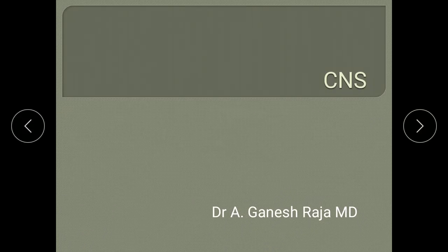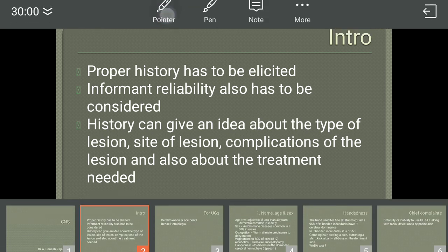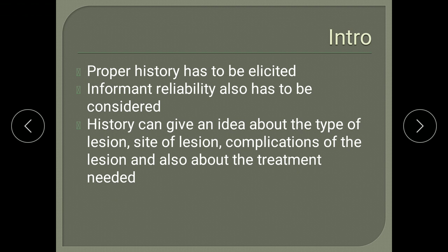A brief outline on case history taking in CNS for undergraduates. A proper history has to be elicited because history per se can give you an idea about the etiology of the stroke, the complications of this incident, the site of lesion, and also will give you an idea about the treatment that has to be considered. So a proper history is very important.